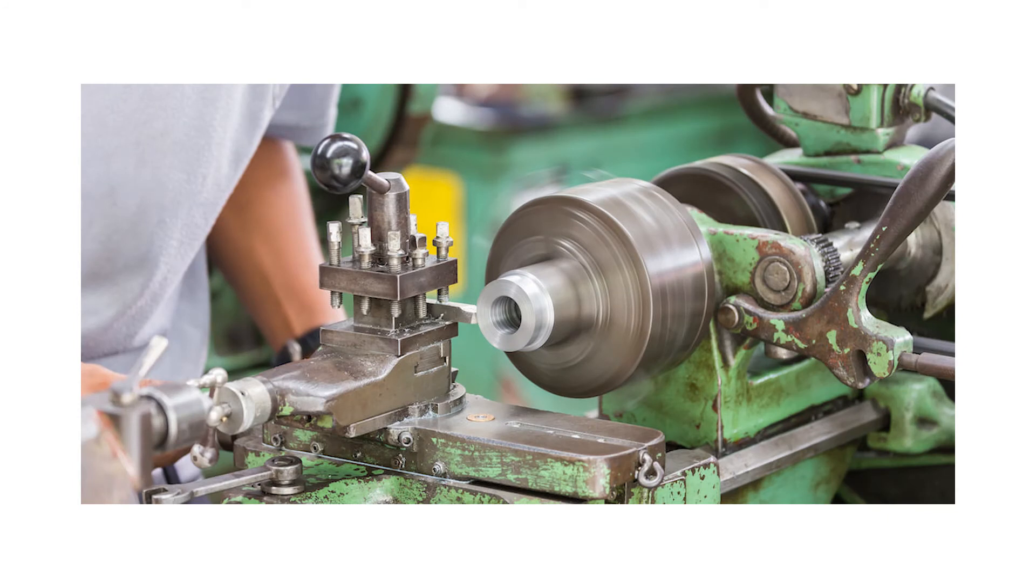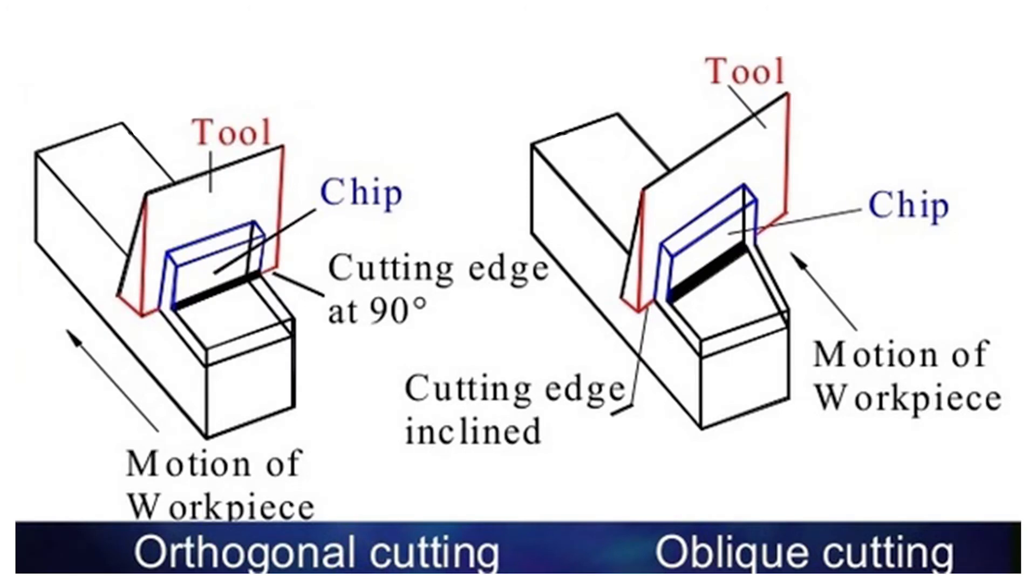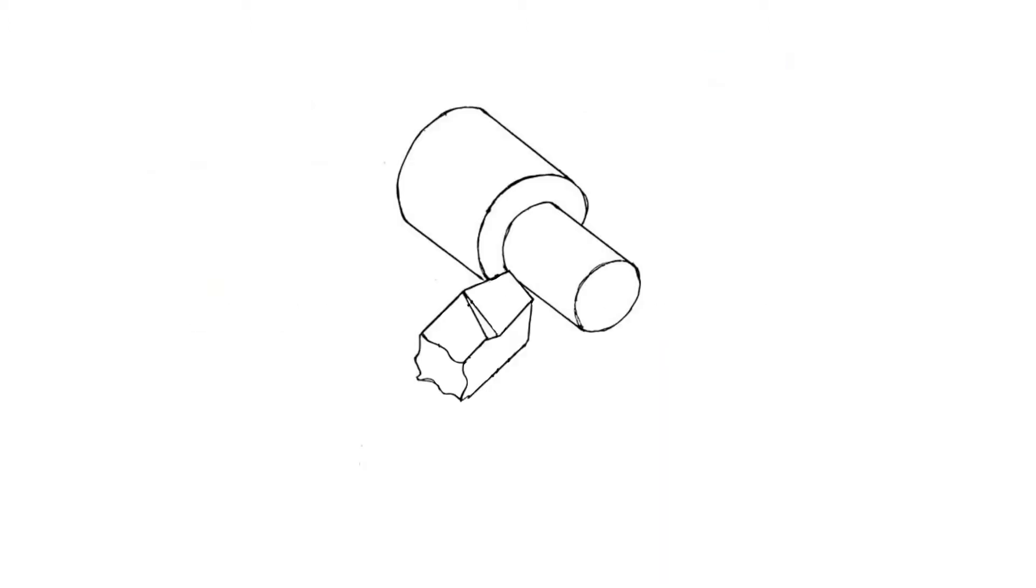We analyze the orthogonal cutting scenario in this video where the cutting edge is perpendicular to the direction of motion of the workpiece and determine all the forces involved. Single point cutting tools being used for turning are characterized by having only one cutting force.